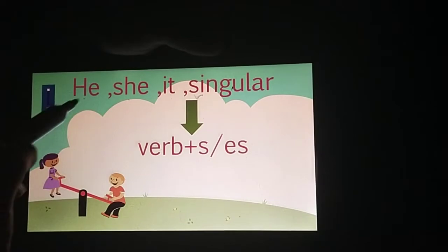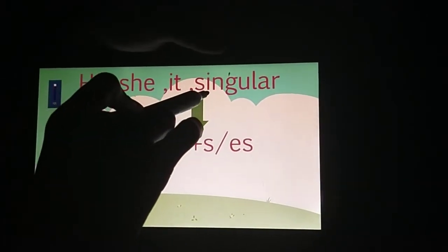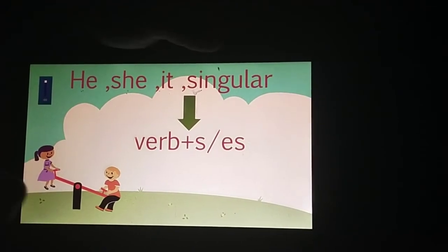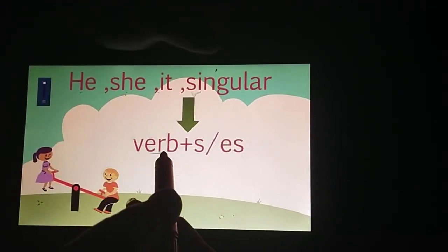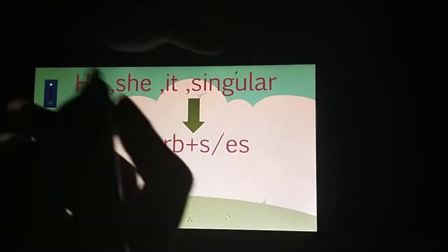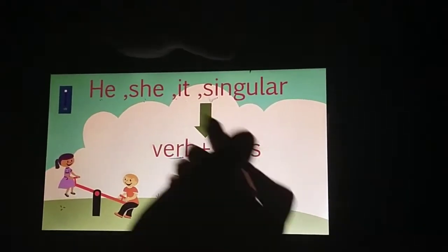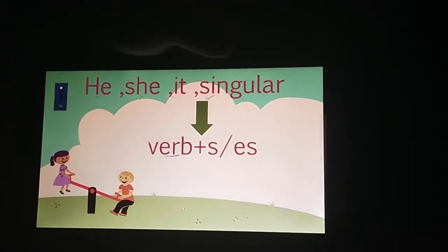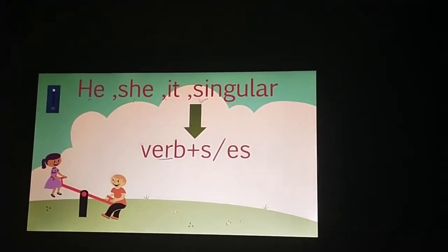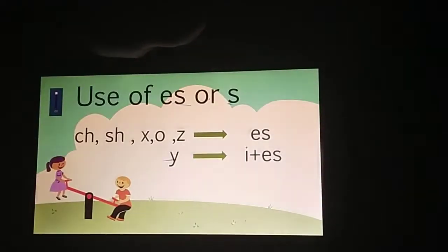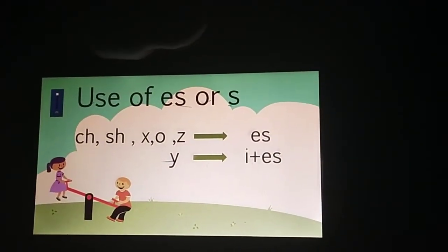Again revise کرتی ہوں: subject اگر ہمارا singular ہو، یا he، she، it ہو، تو ان کے جو verb ہوتی ہے — جیسے crying، going — ان کے ساتھ ہم s یا es add کرتے ہیں۔ ابھی میں آپ کو اسے further explain کروں گی۔ Firstly ہم explain کرتے ہیں کہ s اور es کہاں use کرتے ہیں۔